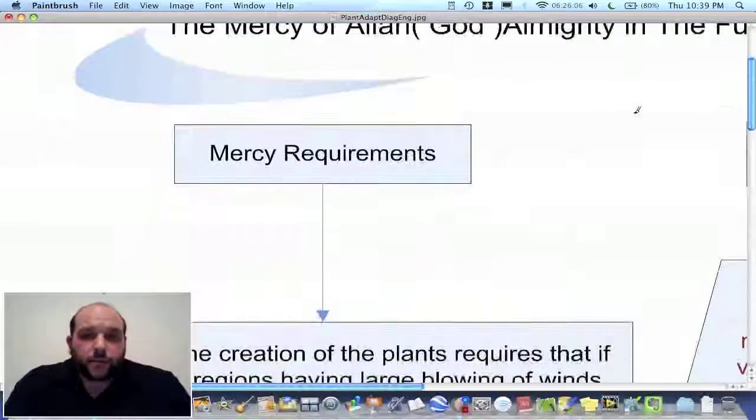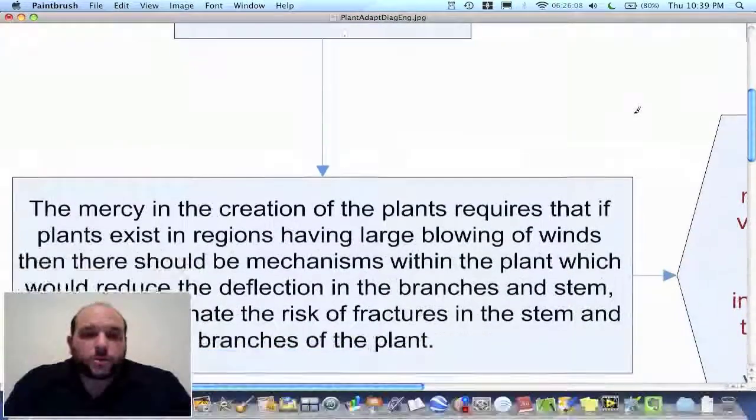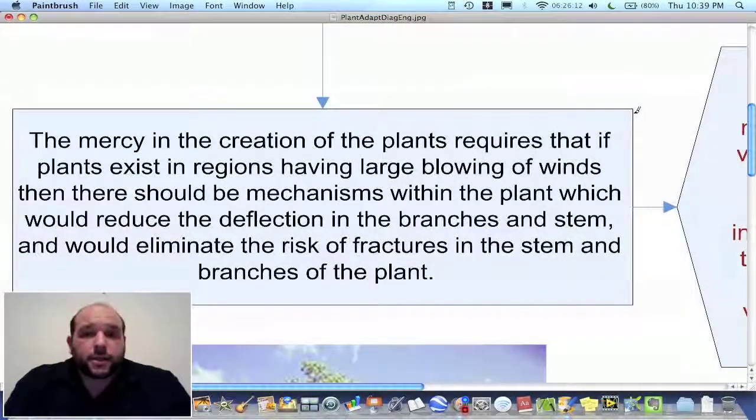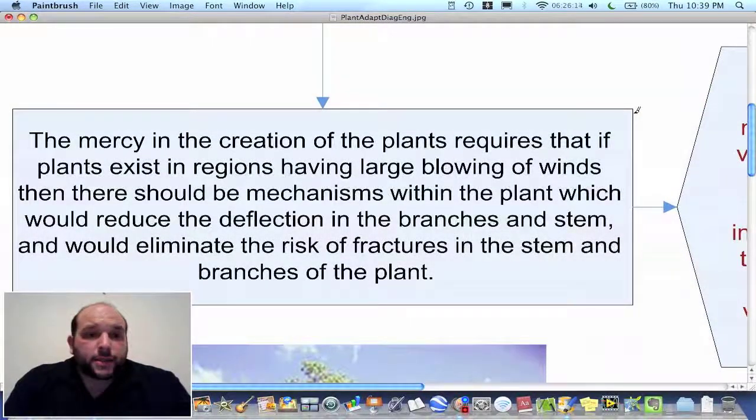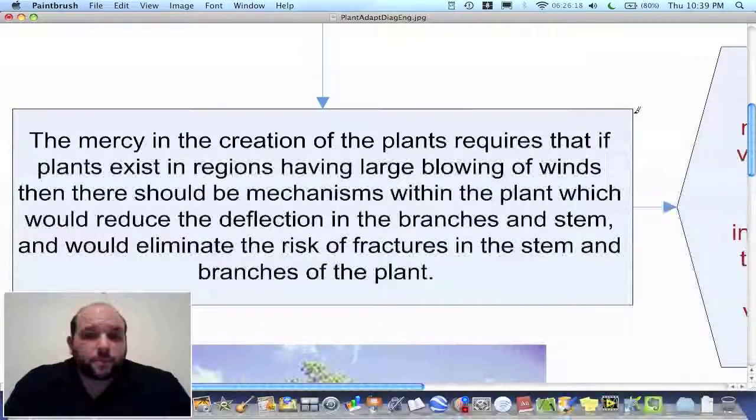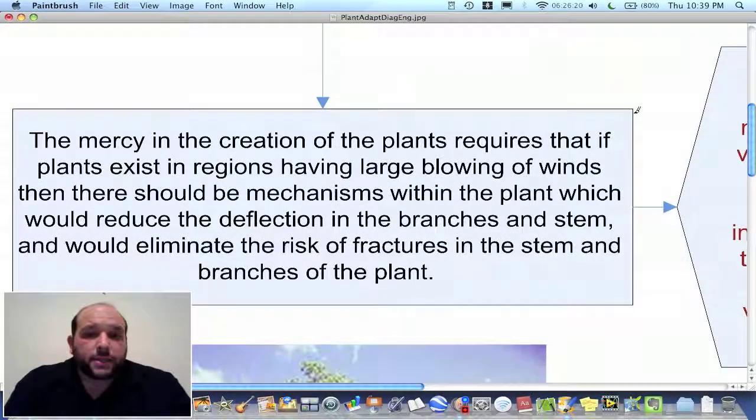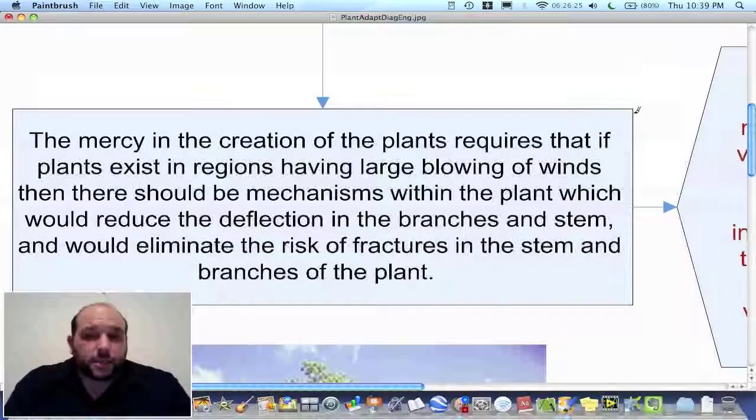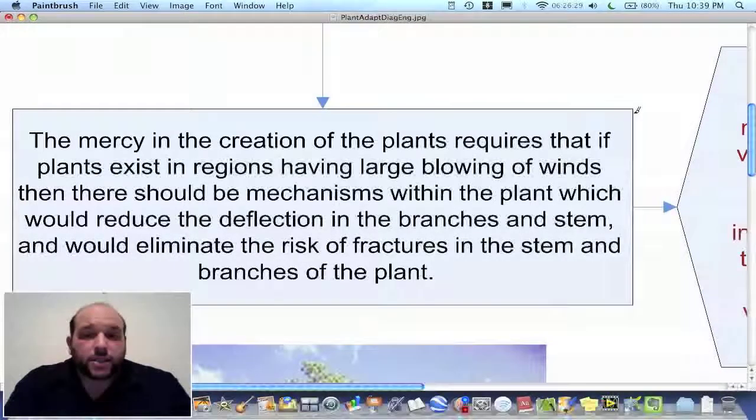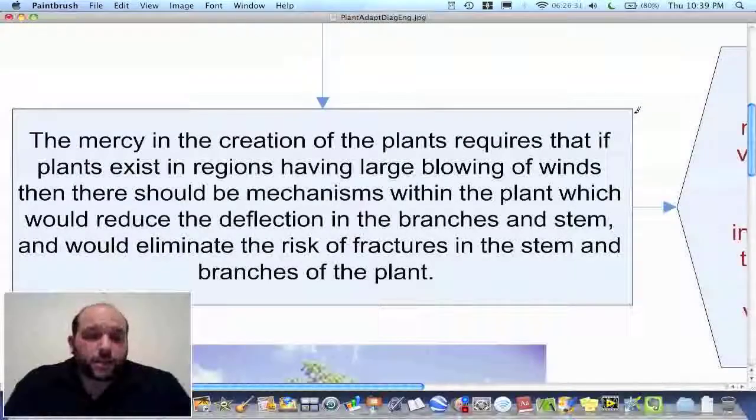So to begin, now when Allah God Almighty wanted to create plants, then the mercy requires that if the plants exist in regions having strong blowing of winds, then there should be mechanisms within the plant which would reduce the deflection in the branches and stem, and would eliminate the risk of fracturing the stem and the branches.